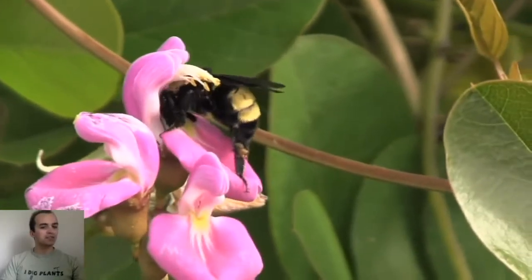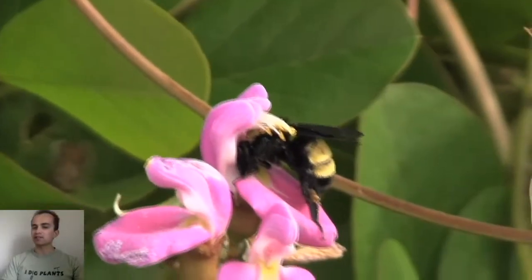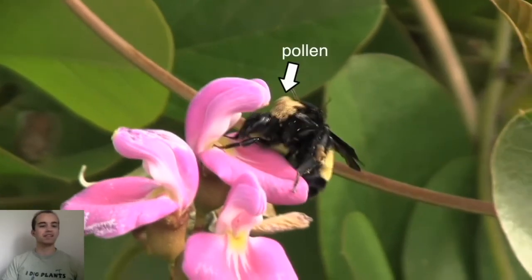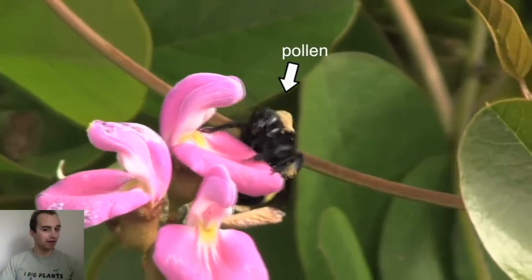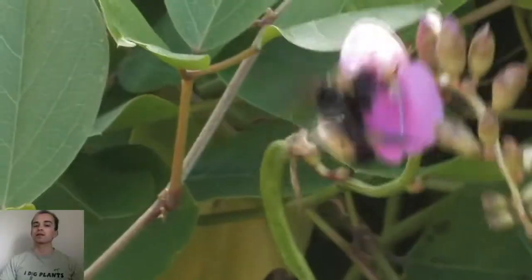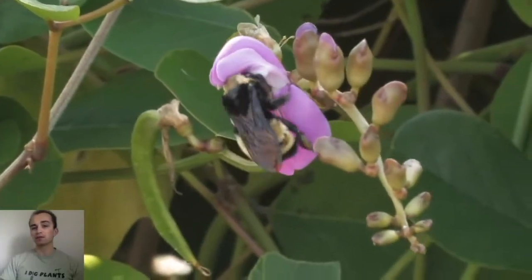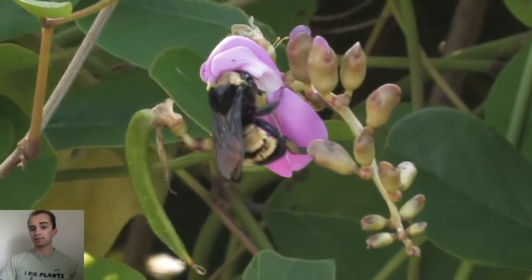Many pea species whack bees on the back with their pollen. The bee landing on the flower causes the stamen and pistil to pop out and smack the bee on the back. The bee can then carry that pollen to the next plant.